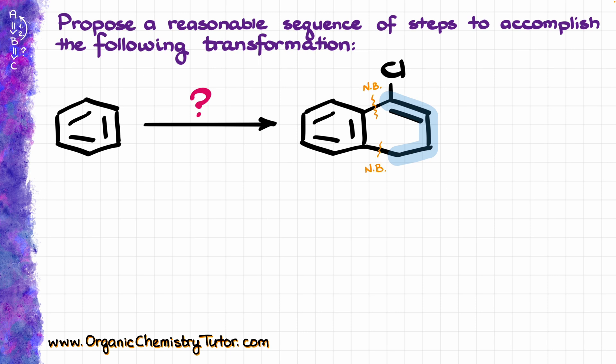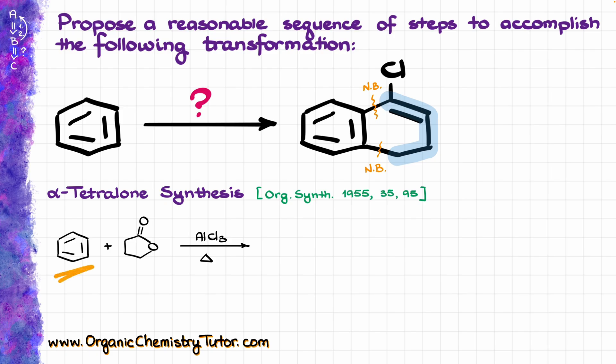And while there are a lot of different ways how we can assemble this bicyclic skeleton, probably the most straightforward one is going to be a classic tetralon synthesis. The alpha-tetralon synthesis is a well-known synthetic procedure which takes the benzene, which I have over here